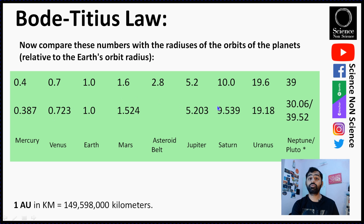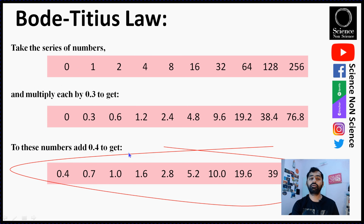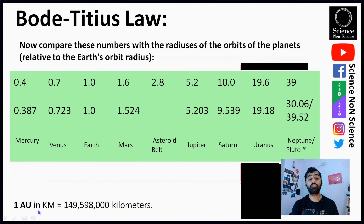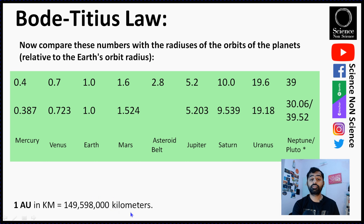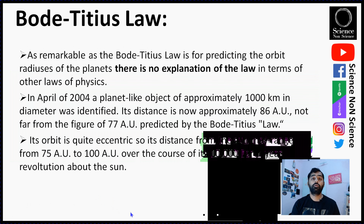These distances are expressed relative to the Sun-Earth distance, which is one astronomical unit (AU). To convert these distances into kilometers you multiply by the AU-to-km conversion constant. The beauty of this law is that with just these numbers you can tell the approximate distances of all the planets in our solar system, either in astronomical units or in kilometers.